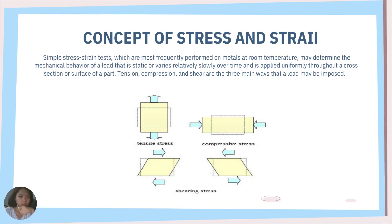For the concept of stress and strain, simple stress-strain tests most frequently performed on metals at room temperature may determine the mechanical behavior of a load that is static or varies relatively slowly over time, and is applied uniformly throughout a cross-section or surface of the part. Tension, compression, and shear are the three main ways that a load may be imposed.